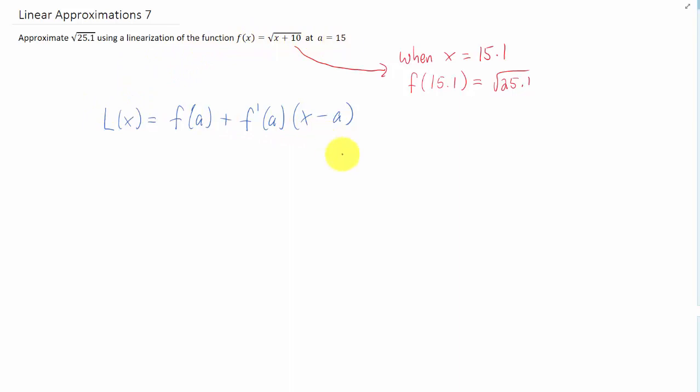Let's do it. We might point out before taking a derivative that the function f of x can be written as x plus 10 to the 1 half power. That might make things a little bit easier when differentiating. We can use the power rule and the chain rule as well, but the chain rule says we have to multiply by the derivative of x plus 10, and that is just 1.